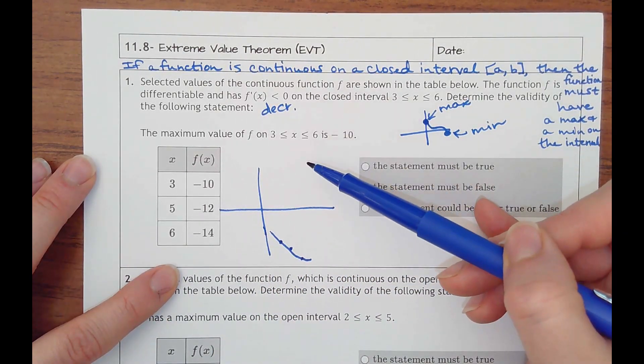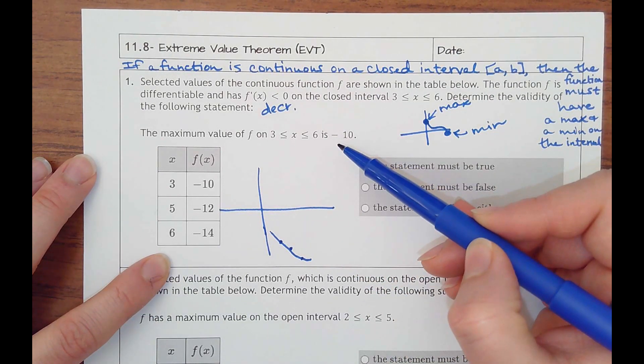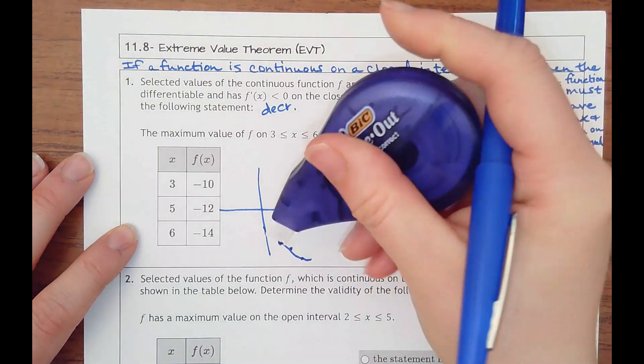It says the maximum value is negative 10, so really that's here. I shouldn't have had my line.